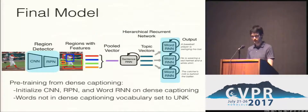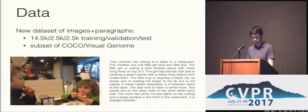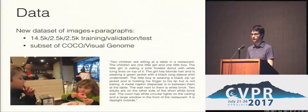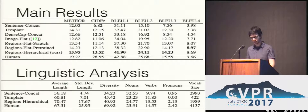Our final model is end-to-end differentiable, and we pre-trained the CNN, region proposal network, and word RNN on a dense captioning task. To train and evaluate our model, we introduce a dataset of about 20,000 image and paragraph pairs, which is a subset of MS-COCO and the Visual Genome datasets. Our model outperforms a number of baselines and ablated models across six metrics for image captioning, and we furthermore show that our model matches human descriptions better across a variety of linguistic statistics.